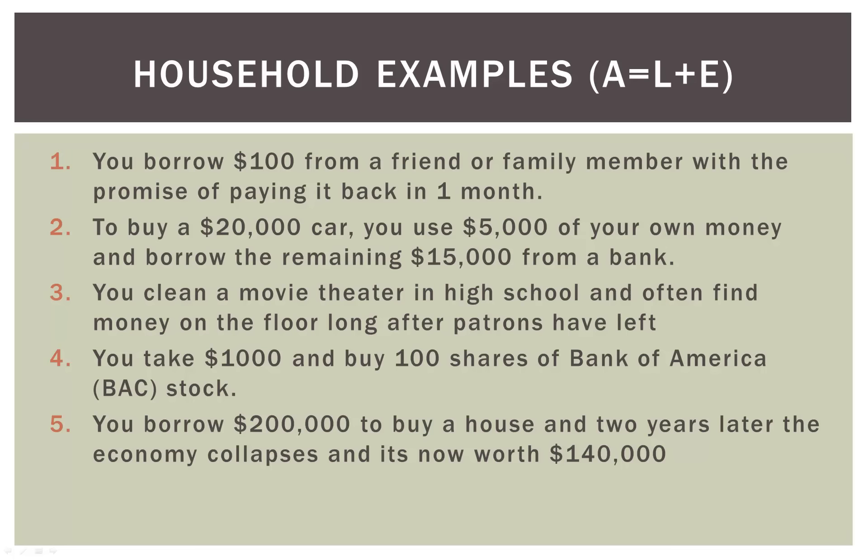So what happens there? Let's say you find five bucks. You now have a new asset — $5 cash. Because you found it out of sheer luck, you now have $5 more equity to your name. So you have a $5 cash asset and $5 in equity.